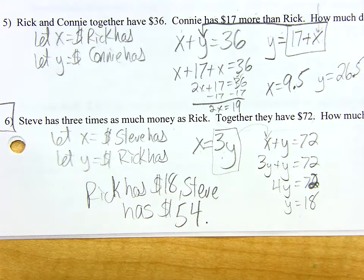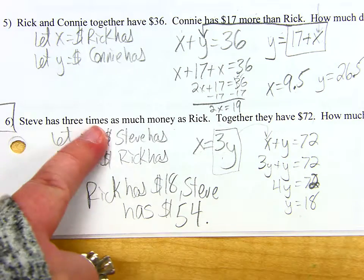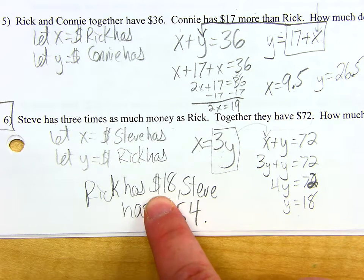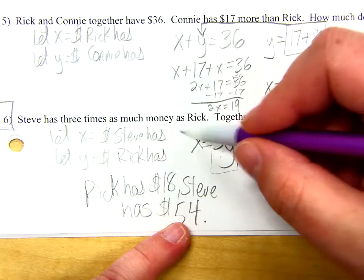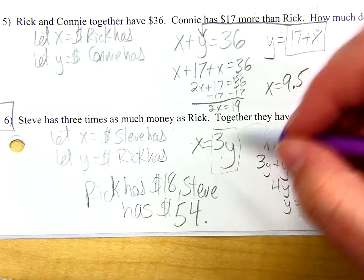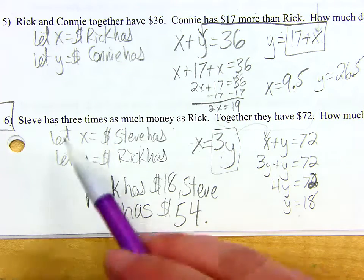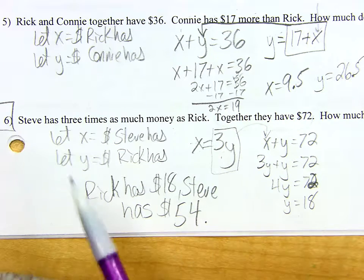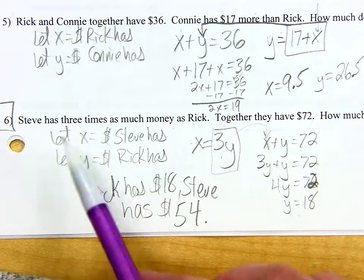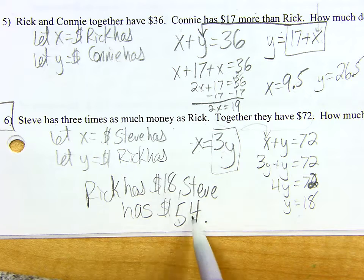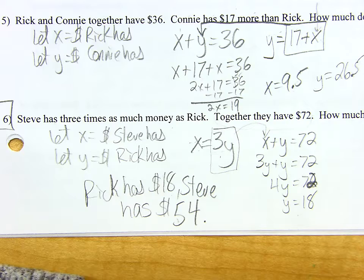I'm begging you to go back and make sure that it makes sense. Steve has 3 times as much money as Rick — if Steve has $54, is that 3 times what Rick has? There are going to be some people that mix these two up, they'll have the Y and X swapped when it shouldn't have been that way. But if you do all the work and then check, if it doesn't make sense you'll catch it — math will help you find an error if only you look for it. Go back and make sure Steve is 3 times bigger than whatever Rick has, and make sure that their sum really is $72. Is 18 and 54 together really 72? Yes, so I know I'm right.